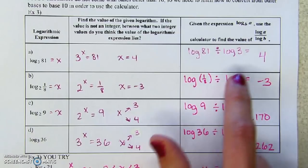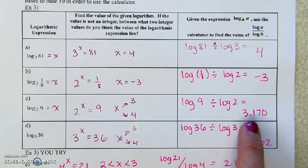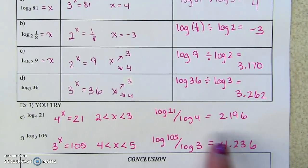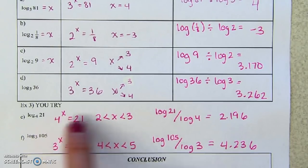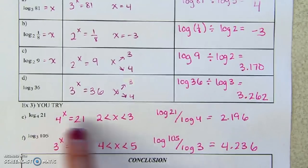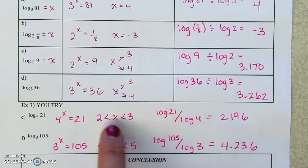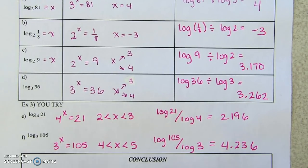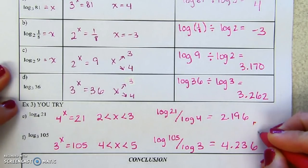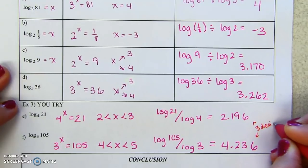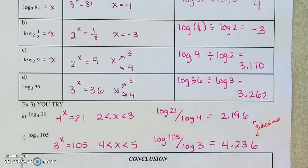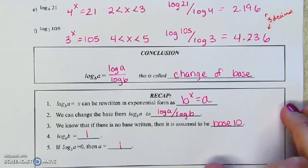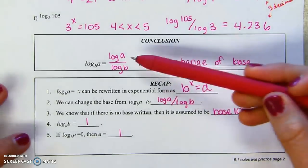Other calculators you have to use the LOG button, and you can check if you got C and D right, and then E and F also. So we take log of the argument divided by log of the base — just remember that the base always goes on the bottom. You can check your answers here. I'm rounding to three decimal places — three digits after the decimal — because I teach AP Calculus. This is called change of base: you're changing the base from whatever it is to base ten.